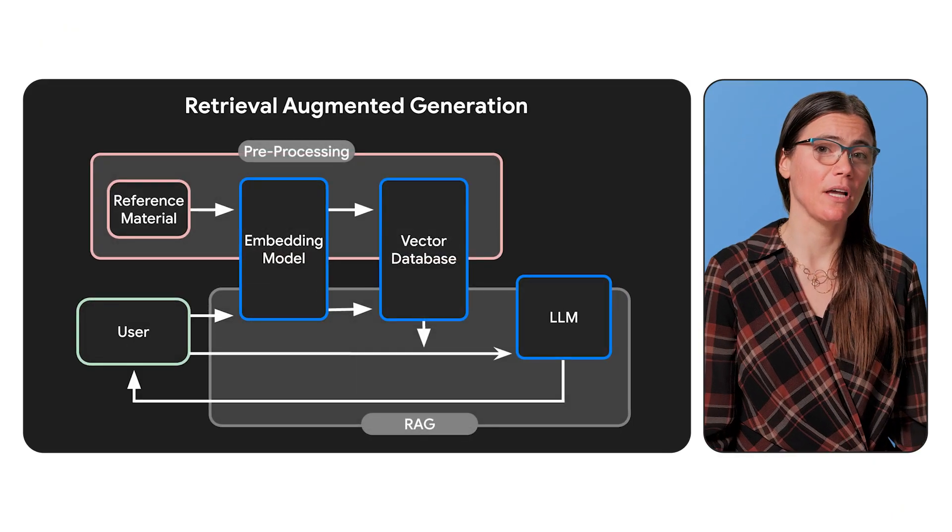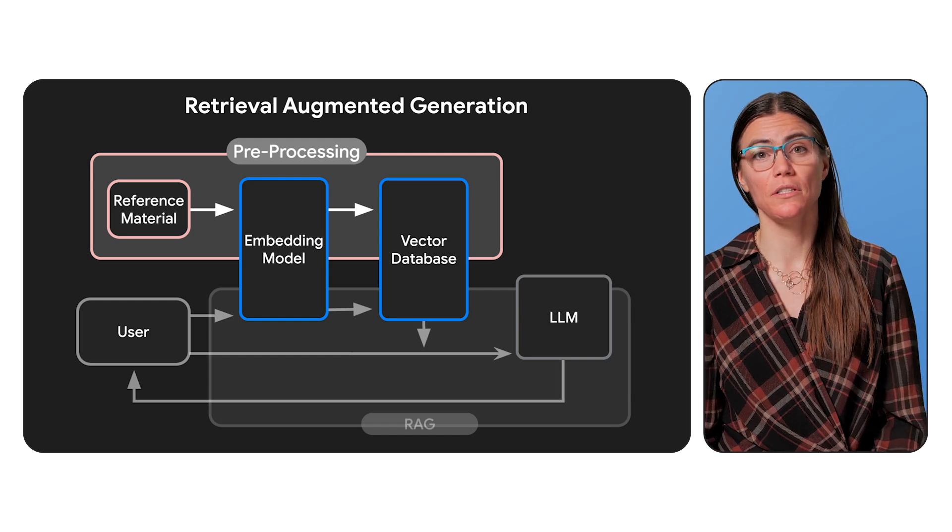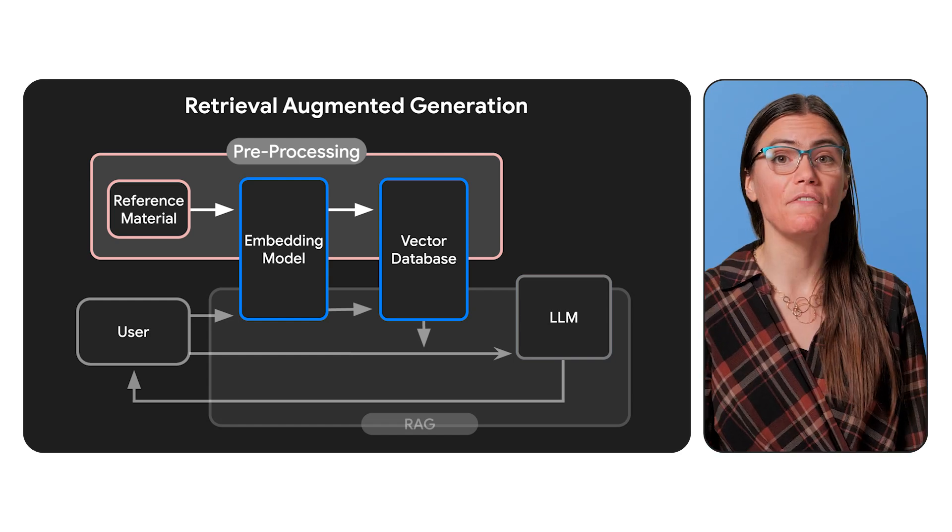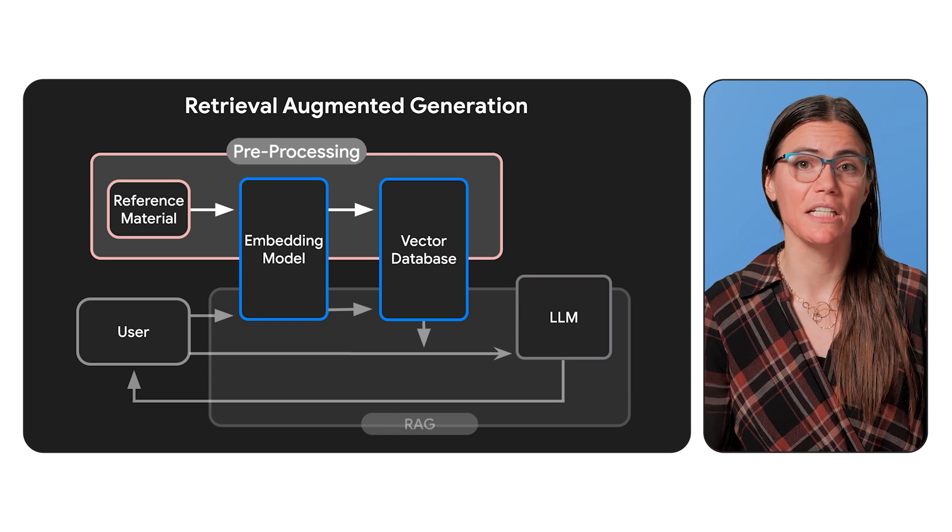Okay. So to start with, RAG apps have a preprocessing step where you need to create the embeddings for the data you want to use for grounding your responses. Our videos on embeddings can help you understand the options here and the things you need to consider.